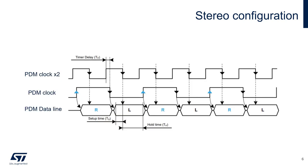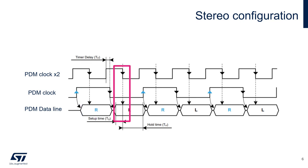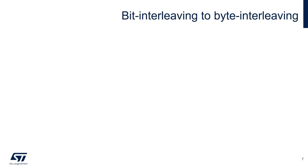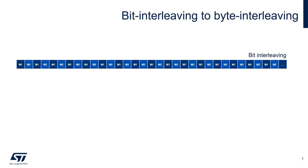In this way the SPI or I2S peripheral working at PDM clock times two will be able to read both the right microphone data provided on the rising edge of the PDM clock and the left microphone data on the falling edge. When this kind of stereo acquisition is used, data in the output buffer will be arranged with alternating bits from the two microphones.